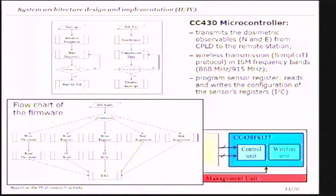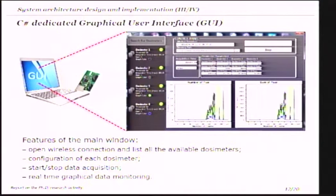The microcontroller firmware receives these two observables and sends them wirelessly to a remote station. The wireless protocol is the SimpliciTI protocol, and the microcontroller can work in two frequency bands: the European band and the American frequency band. A dedicated acquisition system has been designed that controls the data acquired by the system. The user can list the available dosimeters on the network, control the start and stop of acquisition, and two graphs monitor in real-time the data recorded by each dosimeter.